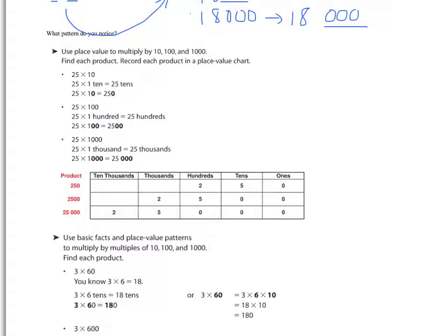Alright, so what we did notice is that, for example, when you multiply by 10, you add on one zero. When you multiply by 100, you add on two zeros. When you multiply by 1,000, you're going to add on three zeros.